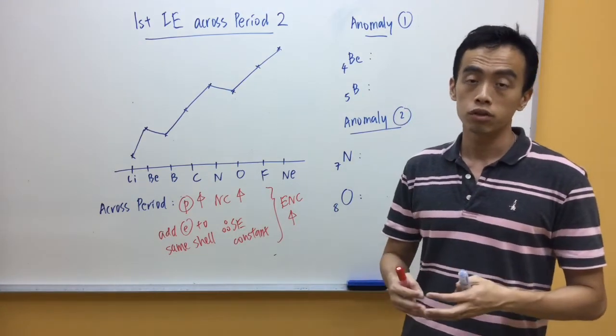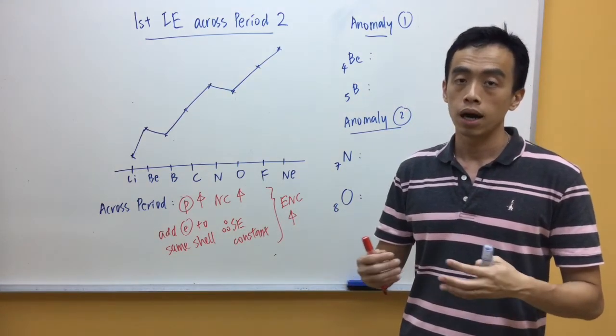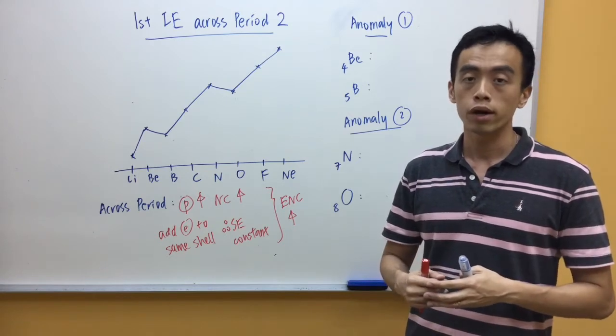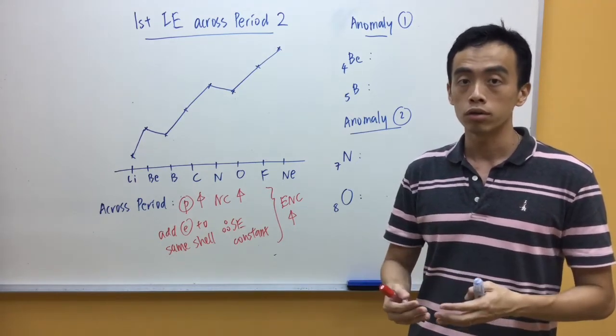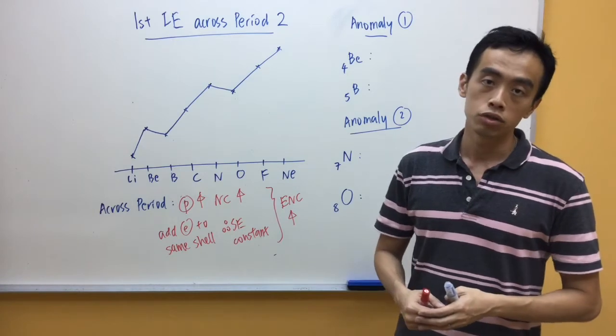Now, this means the valence electrons are more tightly bounded by the nucleus, so it requires more energy for me to remove the electron. So, therefore, the first ionization energy increases.